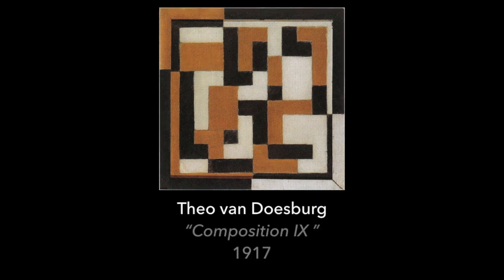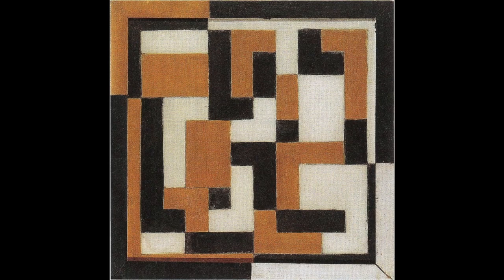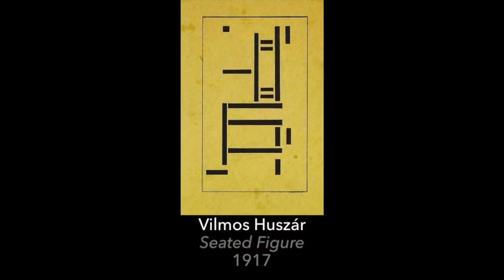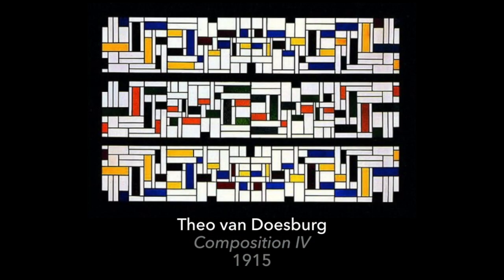This painting was made by a man named Theo von Dozberg in 1917. He called it Composition 9. In this project, we're going to wonder if paintings like these, or stained glass like this, could be representing numbers. What do you think? Could this image be of an amount, a number?